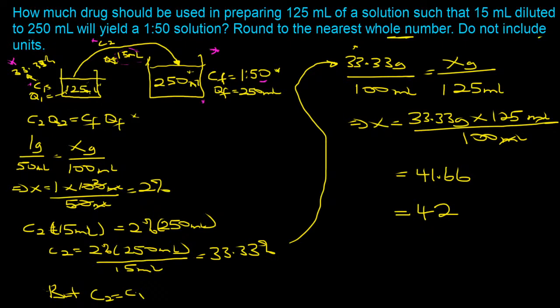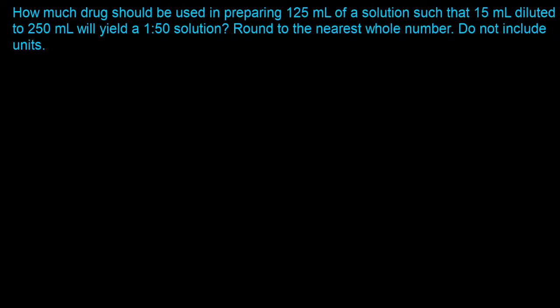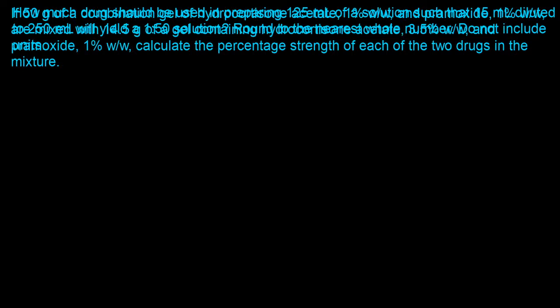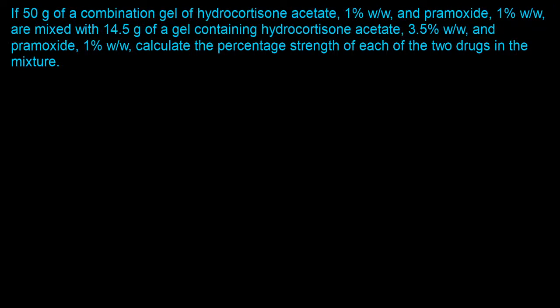Moving on to the next question: if 50 grams of a combination gel of hydrocortisone acetate 1% w/w and primoside 1% w/w are mixed with 14.5 grams of a gel containing hydrocortisone acetate 3.5% w/w and primoside 1% w/w, calculate the percentage strength of each of the two drugs in the mixture.